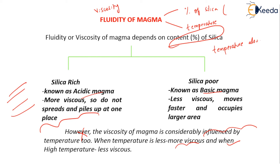In summary, according to percentage of silica, magma is divided into two types: silica-rich and silica-poor. Coming to temperature: low temperatures result in more viscous magma, and high temperatures result in less viscous magma. Thank you.